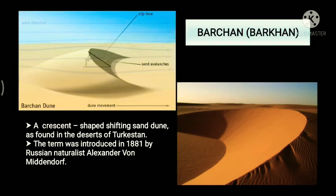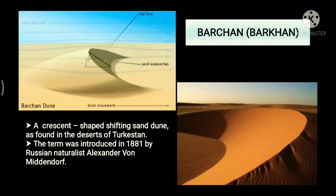An important feature of the desert is sand dunes. The first type is Barchans — crescent-shaped sand dunes found in the deserts of Turkestan. The term 'Barchan' was introduced in 1881 by Russian naturalist Alexander von Middendorf. Barchan dunes form where conditions are ideal: a flat landscape, winds from only one direction, and a limited amount of sand. Barchan dunes point against the wind.